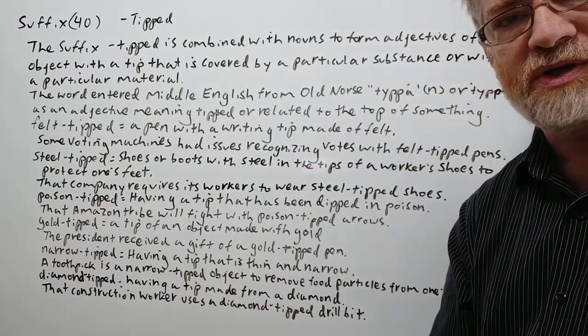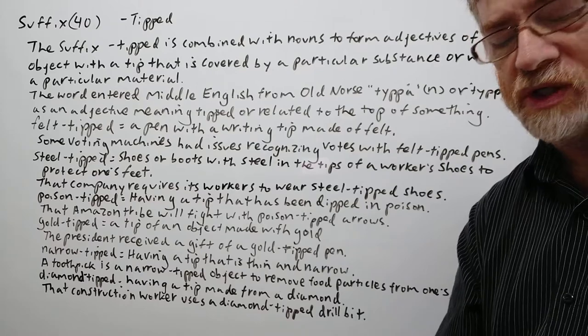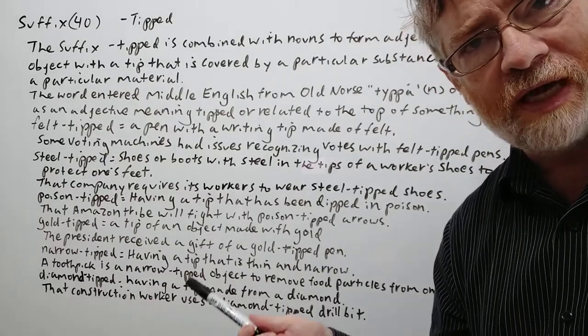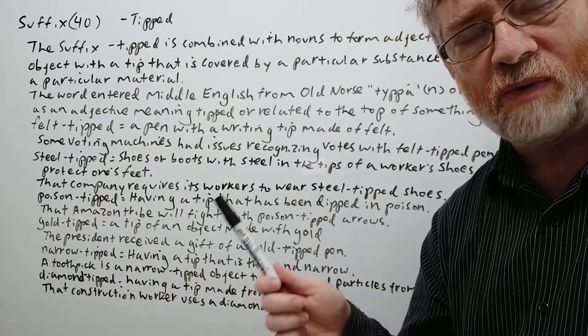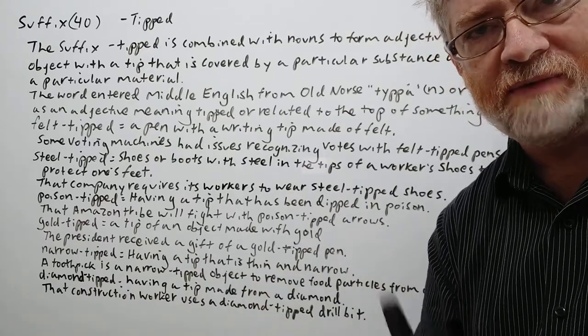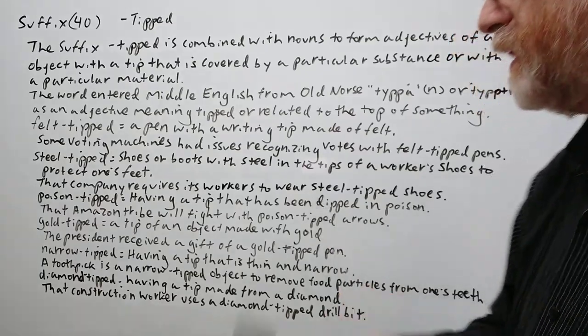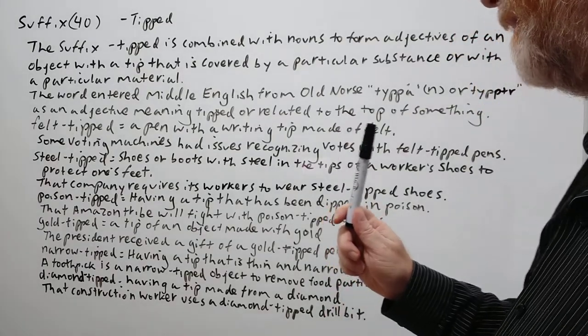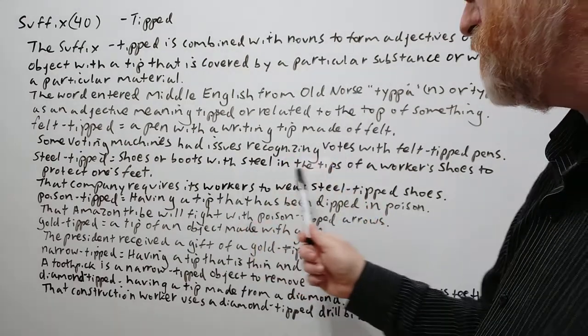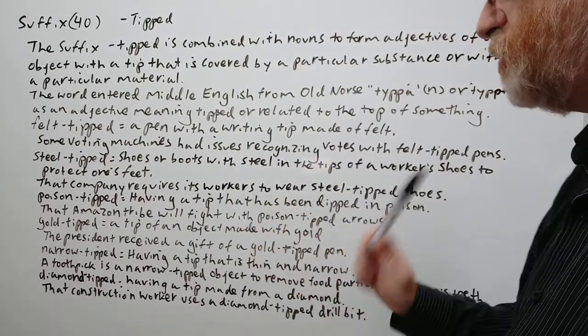For the sake of insurance and also to protect the workers, they require some of their workers to have steel tipped shoes. It may still hurt but it probably won't break. It'll save breaking the toes or breaking part of the foot. That company requires its workers to wear steel tipped shoes.